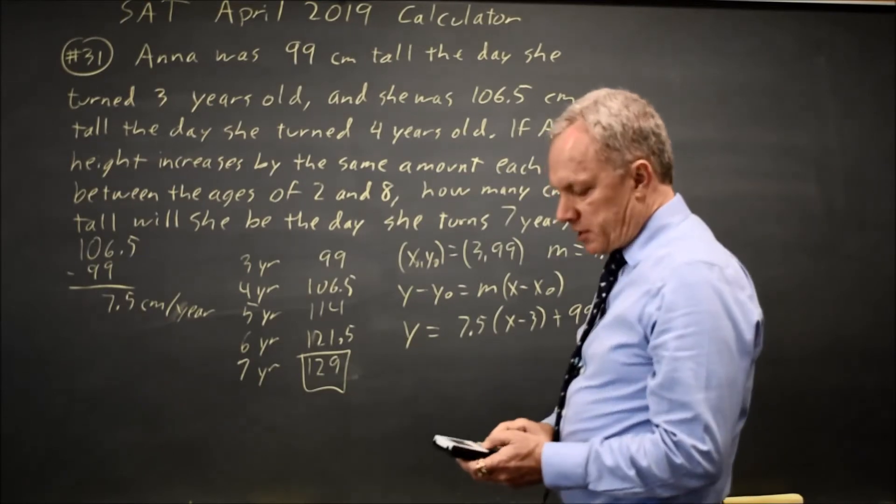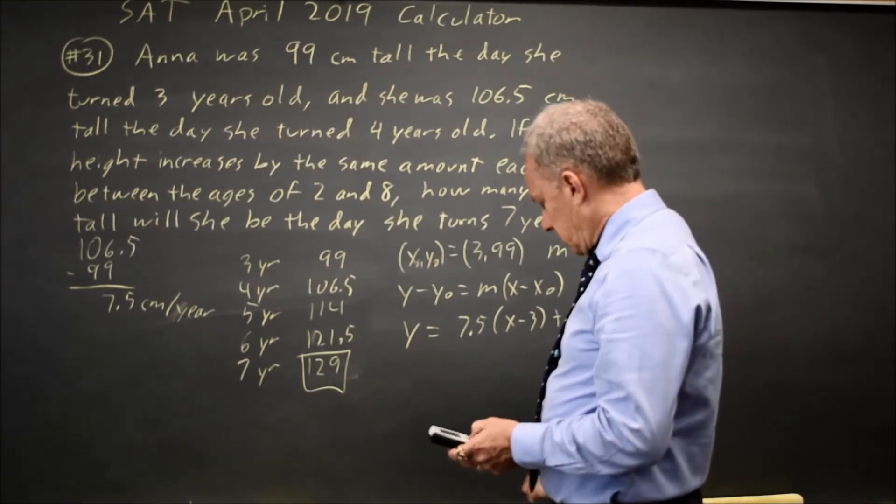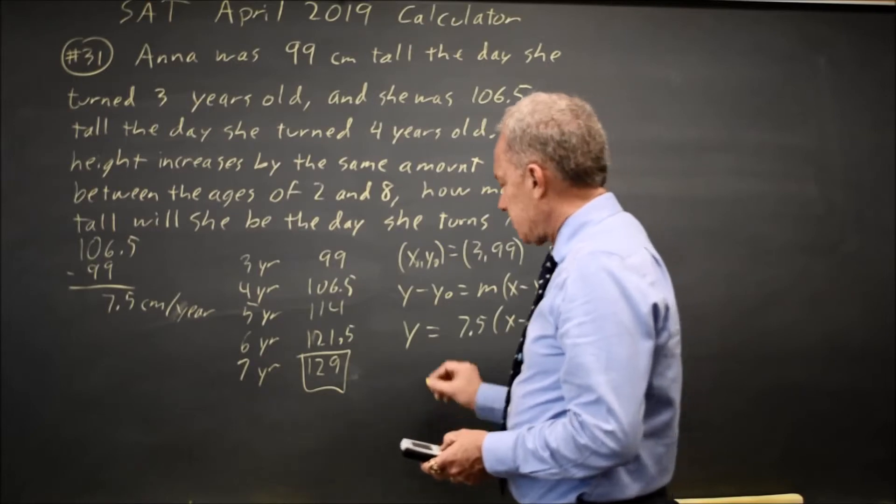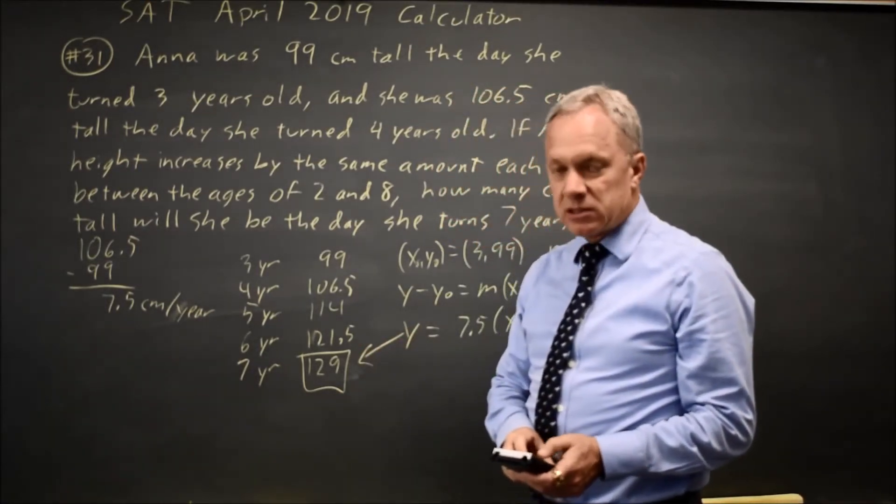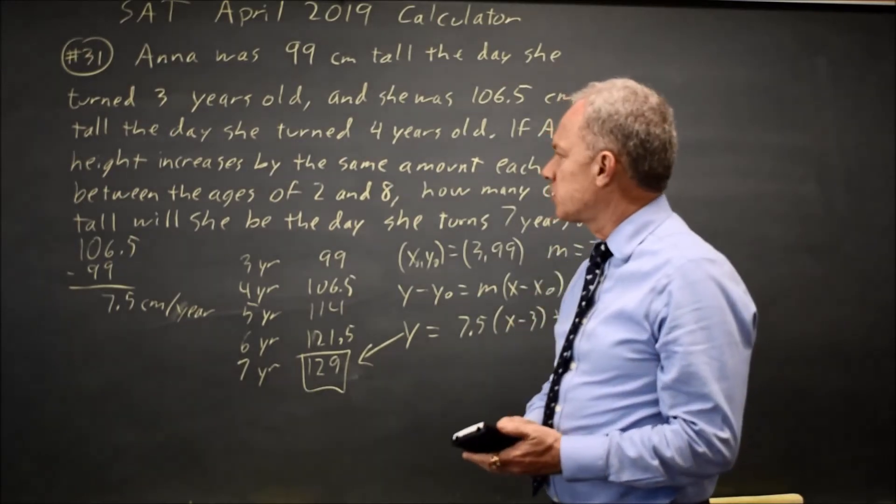I can put that into my calculator and look at the table of values, and again I get when x is 7, y is 129, her height is 129 centimeters.